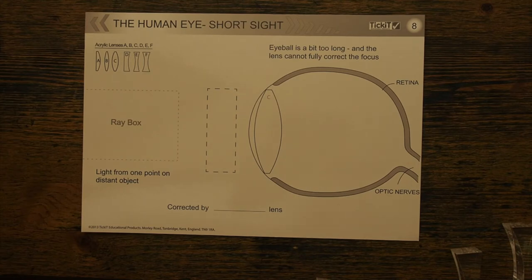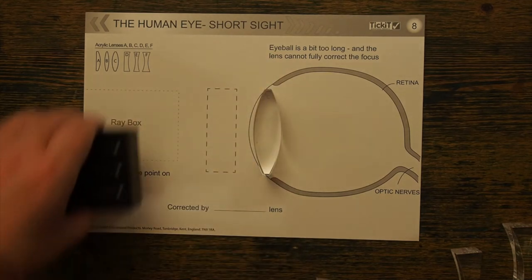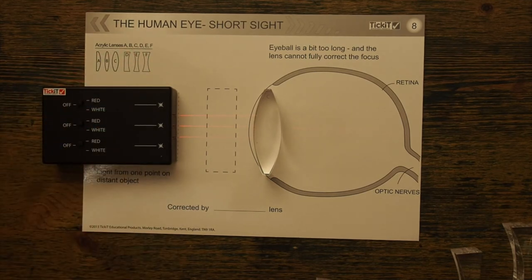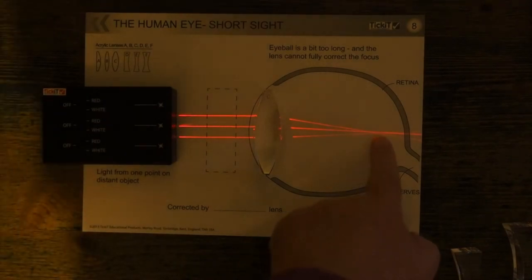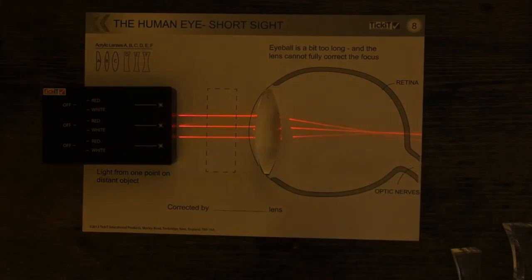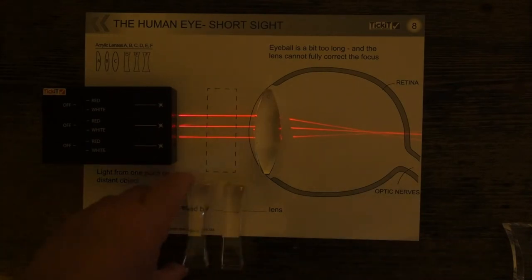In the case of people who are short-sighted, their eyeballs are too long. If I put my lens back in and my ray box back in, you will see when I turn the light off that the point of focus is inside the eye. When this occurs, we need to correct this through either contact lenses or glasses. The one you're going to use will depend very much on the extent to which the eye is longer than it should be.